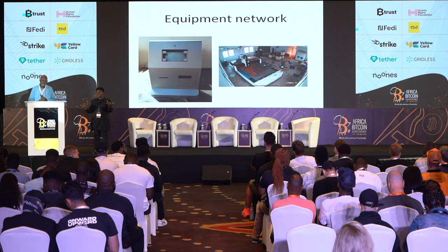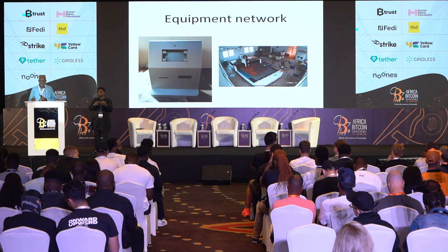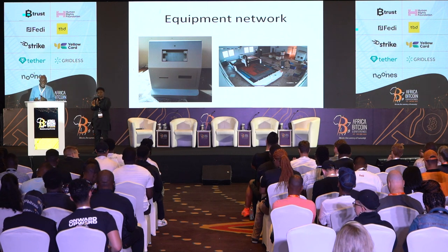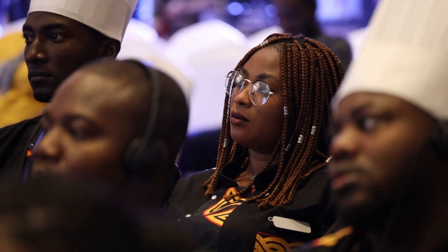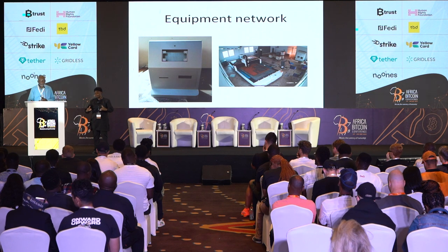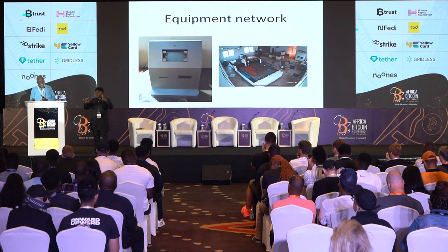We produce a family of products from small kiosks that take in cash and give you virtual products — a vehicle for distribution of Bitcoin, because you put in cash and get a virtual product. You can get mobile money, airtime, or crypto if you choose. We've advanced to making ATMs as well, and we use open standards — we run Unix and Linux — and that's how we develop our things.